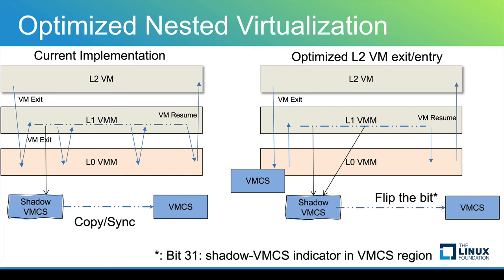The optimization we have doesn't require copy or sync because the shadow VMCS is identical to the real VMCS. We still need to intercept the limited VMCS fields by the L1 VM for security purposes. But the contents are basically the same, so we can just flip the bit.